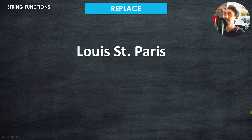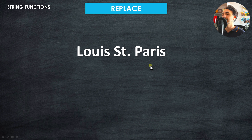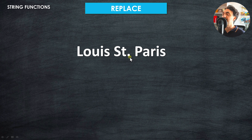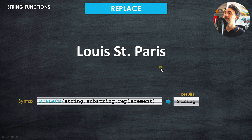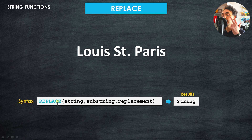The replace function in Tableau is very simple — it can replace one substring with another. For example, we have an address that contains the abbreviation 'St.' for street in the middle. We would like to replace that abbreviation with the complete word 'street'. Let's check the syntax: it starts with the replace keyword and needs three arguments.